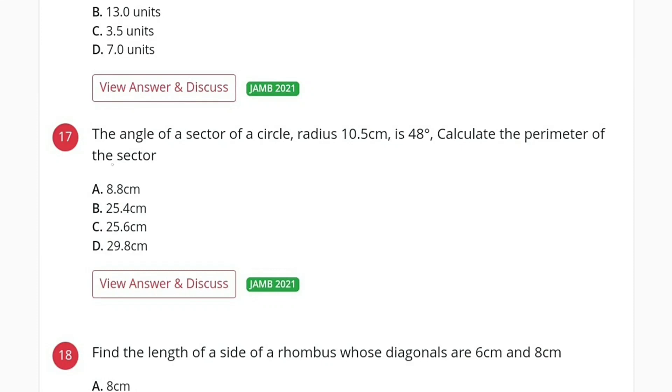Question number 17. The angle of a sector of a circle with radius 10.5 cm is 48 degrees. We are asked to calculate the perimeter of this sector.